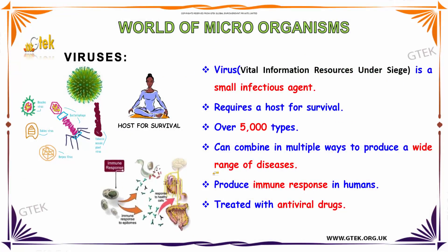Let us see about viruses. A virus is a small infectious agent that requires a host for survival. It has over 5,000 types and can combine in multiple ways to produce a wide range of diseases. It produces an immune response in humans and is treated with antiviral drugs. Here you can see the virus and immune response system.